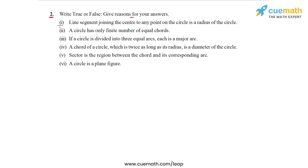So here's what the first statement says: The line segment joining the center to any point on the circle is a radius of the circle. So here's an example of a circle, and let's take any point on the circumference, on the circle itself. And if we join the center to this point, then we get a radius of the circle. So this first statement is true. Joining the center to any point on the circle gives us a radius of the circle.